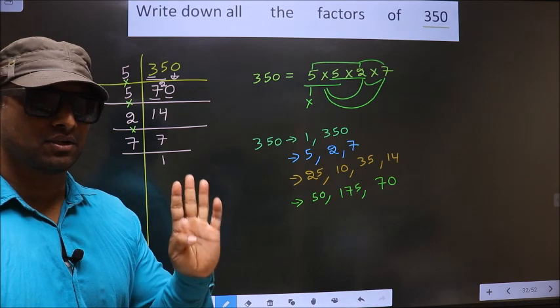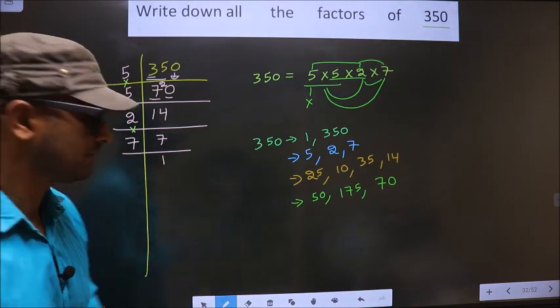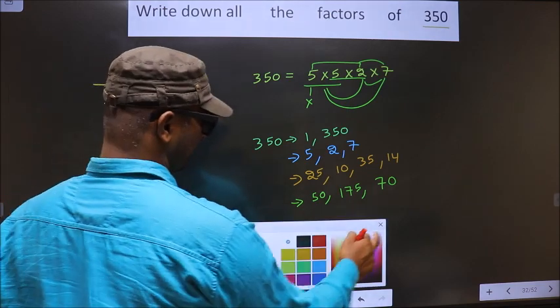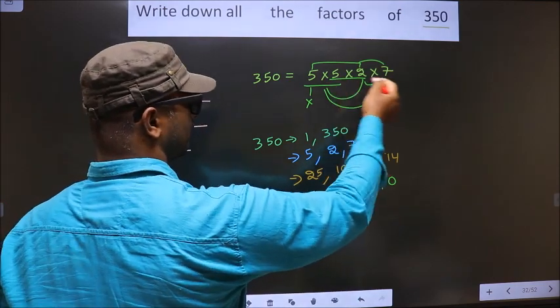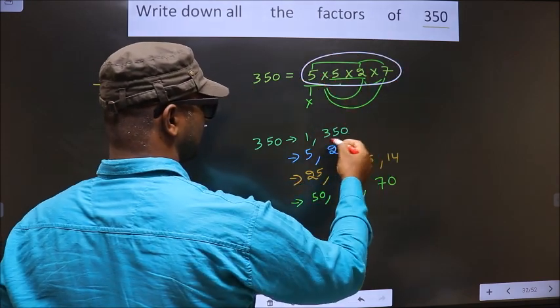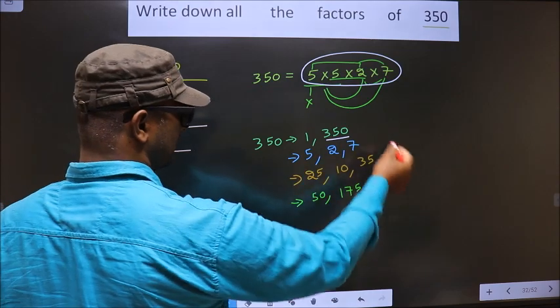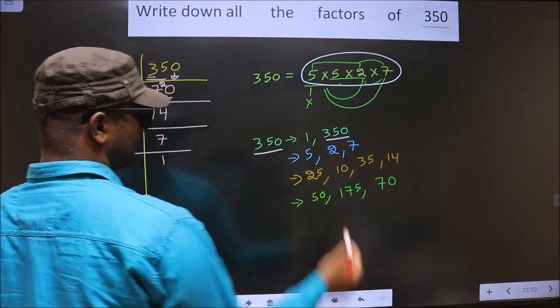Now you take the combination of 4 numbers. How do we take? See. Here we have only 4 numbers. If we take all the 4 numbers, we get 350 itself. Thus, these are all the factors of 350.